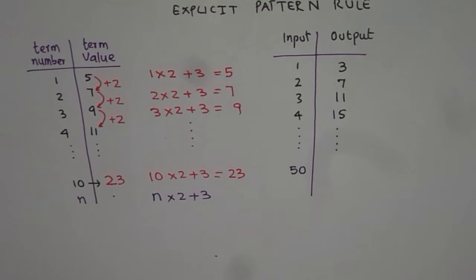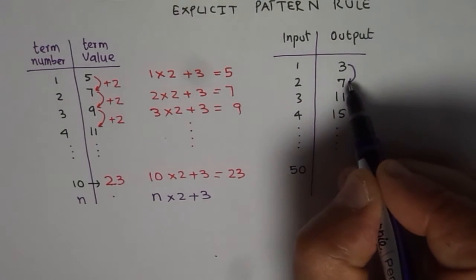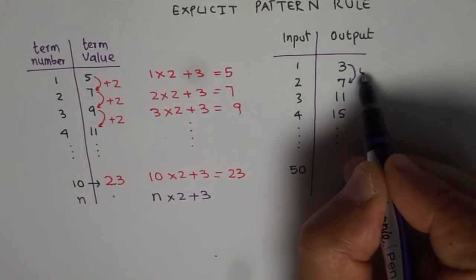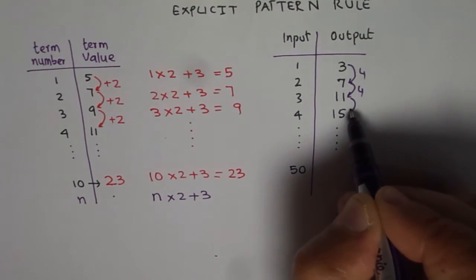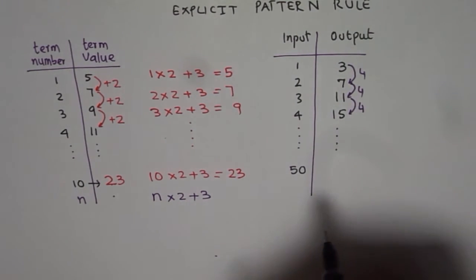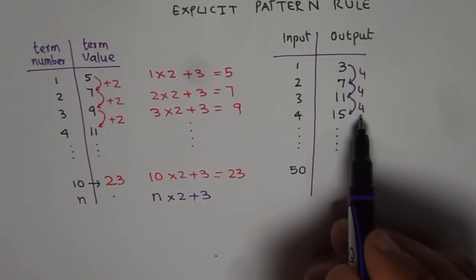Now let us do the next pattern. Here, the numbers are going up by how much? 7 minus 3 is 4. 11 minus 7 is 4. 15 minus 11 is also 4. So they are going up by 4. So our magic number is 4.